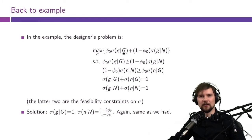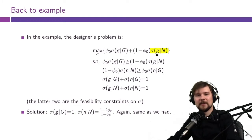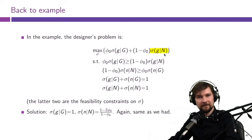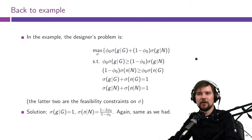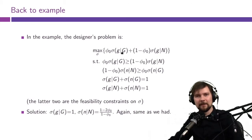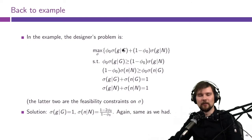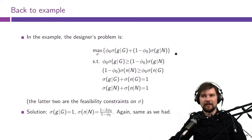σ(g | G) is the probability of issuing the conviction recommendation when the suspect is actually guilty, and σ(g | NG) is the probability of issuing the conviction recommendation when the suspect is not guilty. These two states arise with probabilities φ₀(G) and 1 − φ₀(G) respectively. The other terms involve recommending acquittal, where the prosecutor gets utility zero, so those terms reduce to zero, and the two conviction terms are multiplied by one.